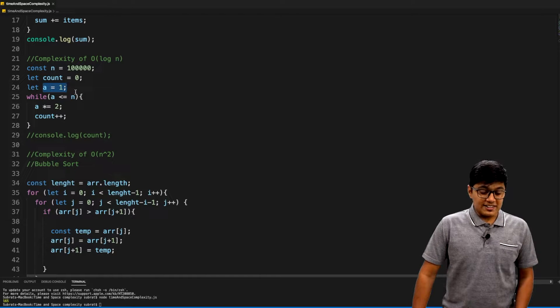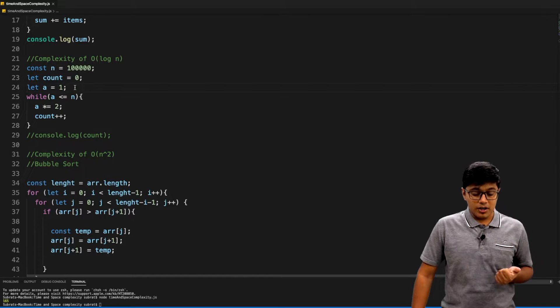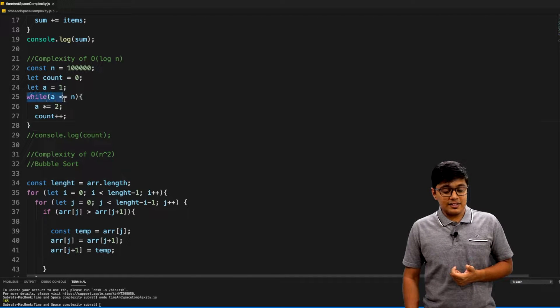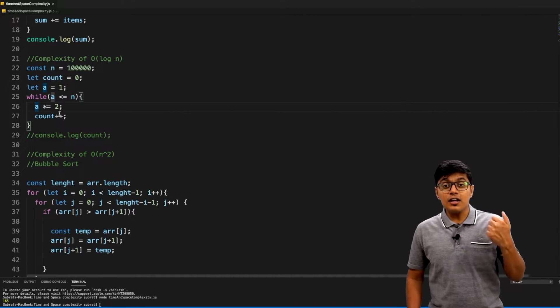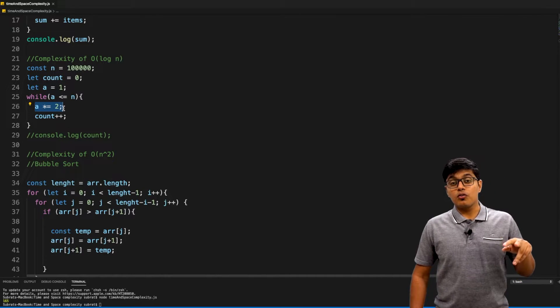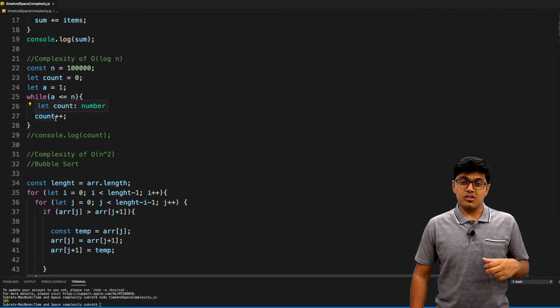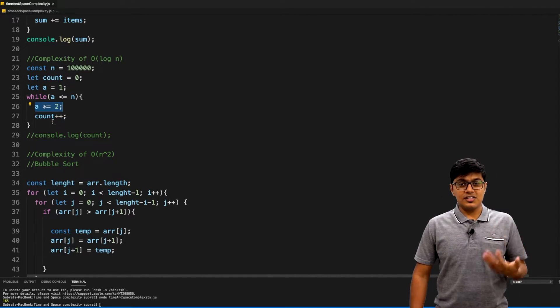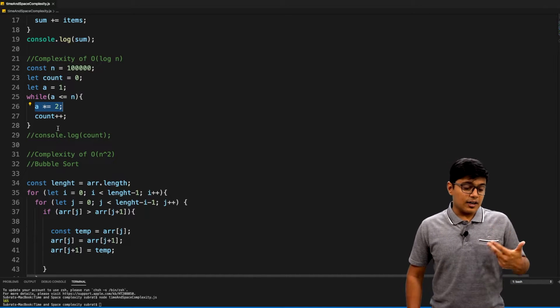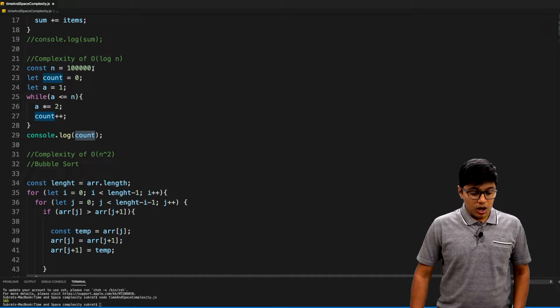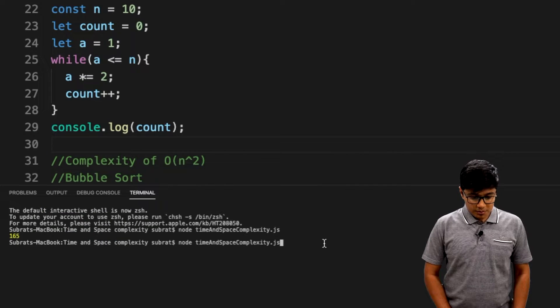We assign a as 1, so the loop will run till a is less than n. Inside the while loop, we are incrementing a value by twice. If suppose first a is 1, then it will become 2, then 4, then 8, then 16, 32, and so on. We are console logging here, so I will show you now. I will run the application.